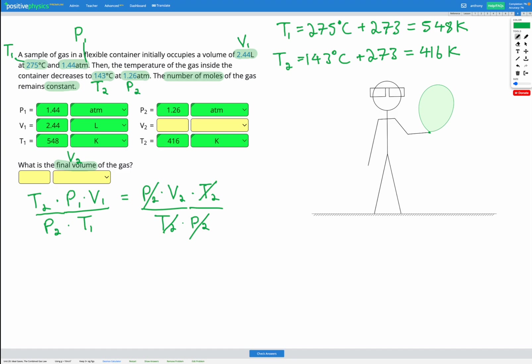So that gives me V2 is T2 times P1 times V1 divided by P2 times T1. So let's put in all our numbers there.